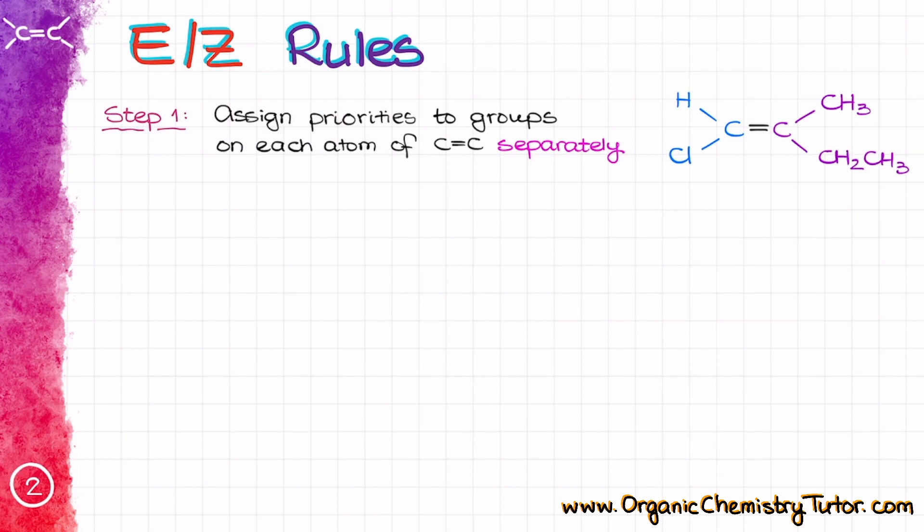Essentially, if I look at the example that we had from the previous page, I'm going to rank the blue side of the molecule separate from the purple side of the molecule. On the left, the blue side of my molecule, the chlorine atom gets a higher priority as it has a higher atomic number than the hydrogen atom.